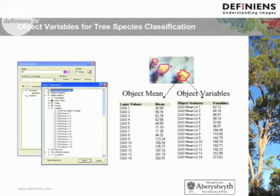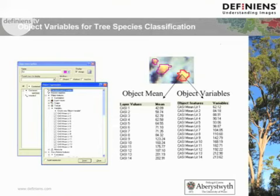On the left, you can see your class description with your feature list, which now includes all these mean-lit spectra as local variables. On the right-hand side, we've selected a crown and you can see the mean values for that crown alongside the local variables — the mean-lit spectra. The values are quite different, and this really improves our classification, with accuracy increases of up to about 10%.